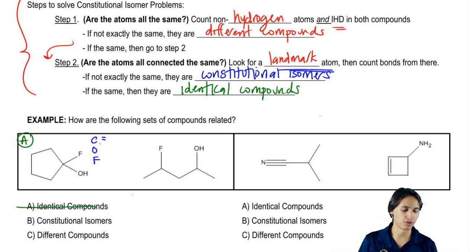So how many carbons do I have in the first molecule? Good, I have five. One, two, three, four, five. How many oxygens do we have? One. How many fluorines do we have? One.